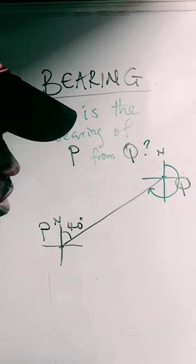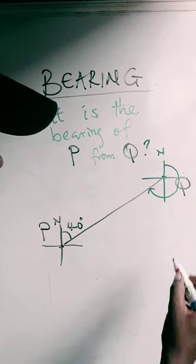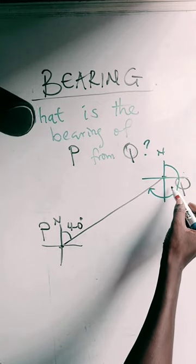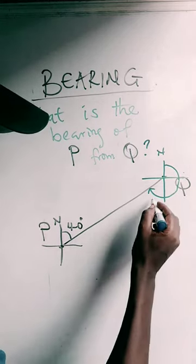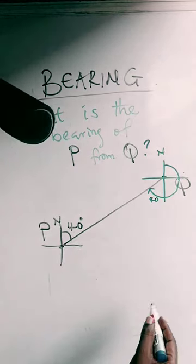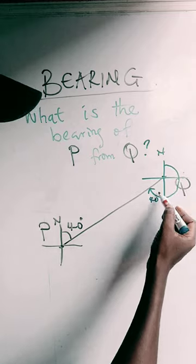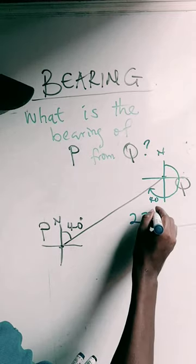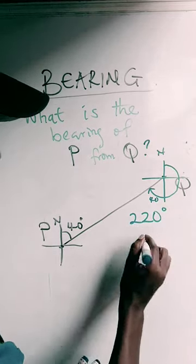Now let's measure this angle. Here is 90, here is 90, which is 180. Here is 40 because this is an alternate angle. So we have 180 plus 40, which is 220 degrees. That is our solution.